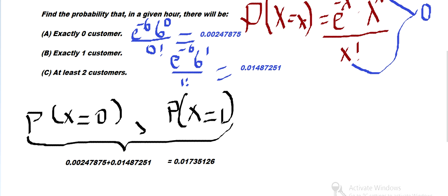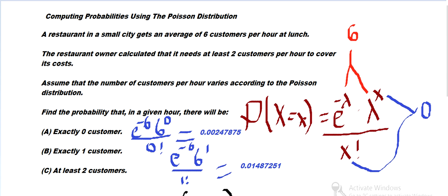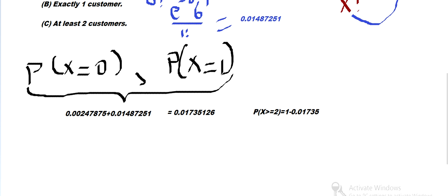That's the probability of getting zero or one customers. The probability of getting at least two customers is 1 minus 0.01755. And we simplify that, and that would be the probability that he has at least two customers, which says the probability he covers his costs. 0.982, pretty high.